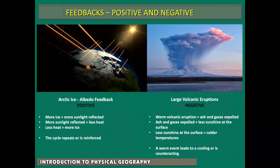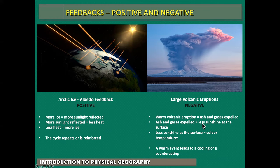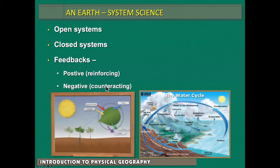Here's an idea of a positive feedback: more ice equals more sunlight reflected, more reflected sunlight equals less heat, and less heat equals more ice — the cycle reinforces itself. A negative feedback would be a volcanic eruption: although warm to start, the ash and gas it expels reflects sunshine, leading to colder temperatures. So one warm event eventually leads to cooling — that's a negative feedback because it counteracts. Positive reinforces, negative counteracts.